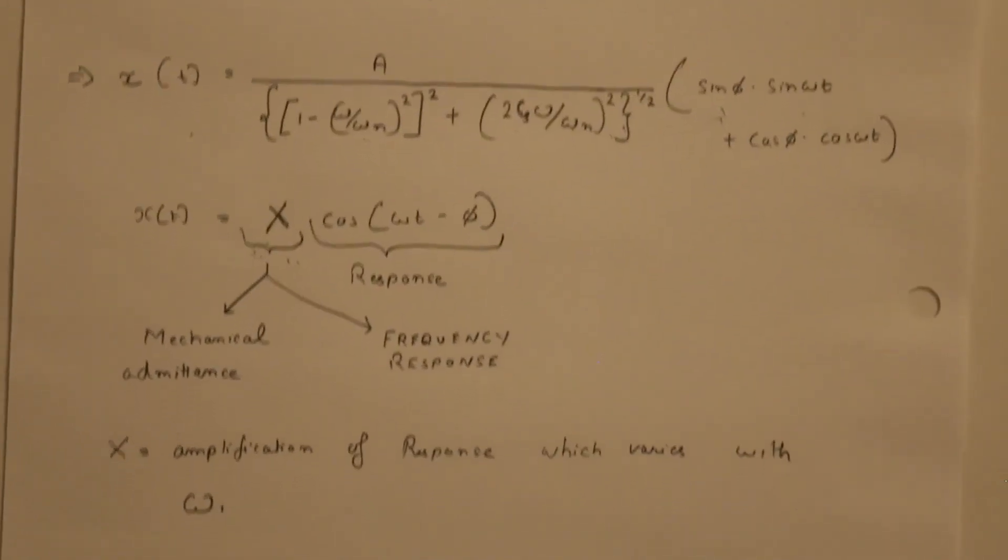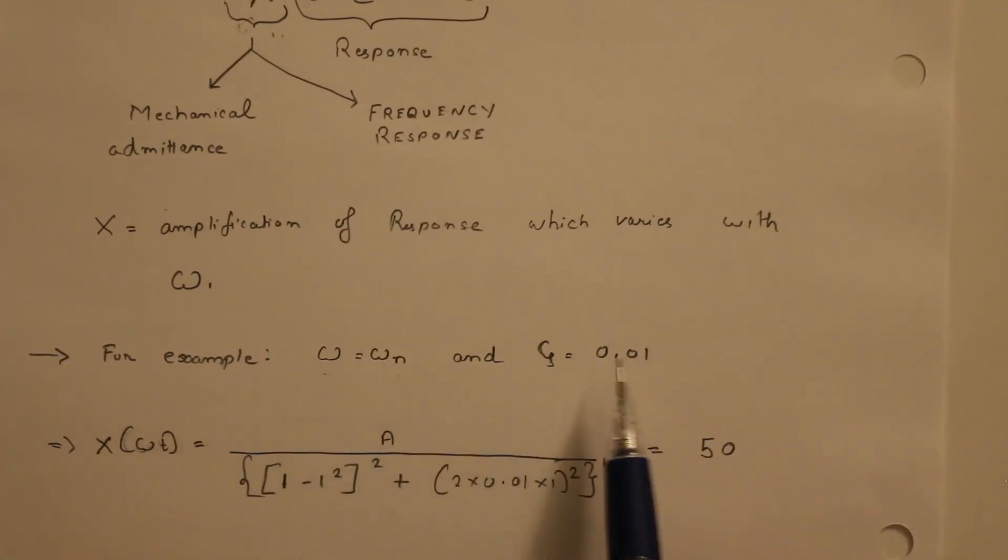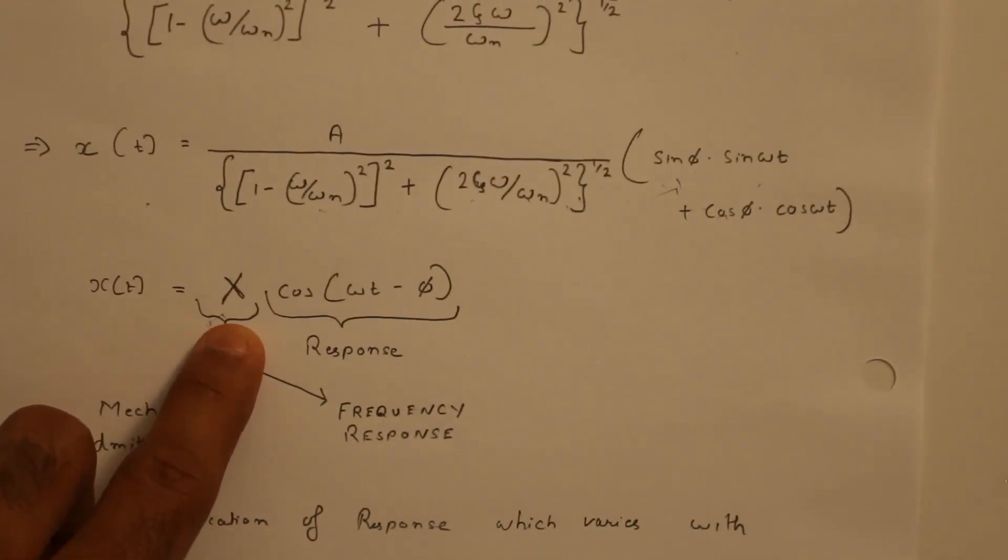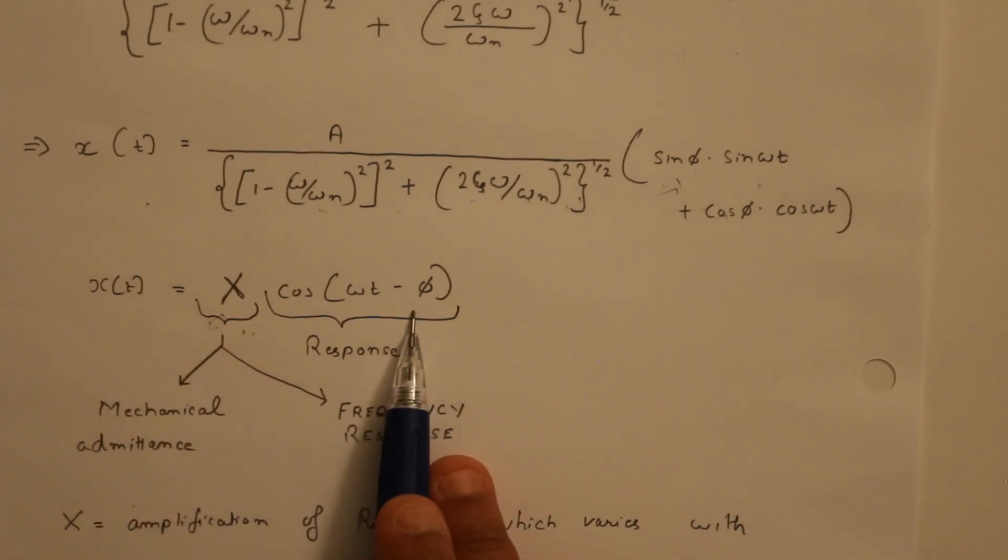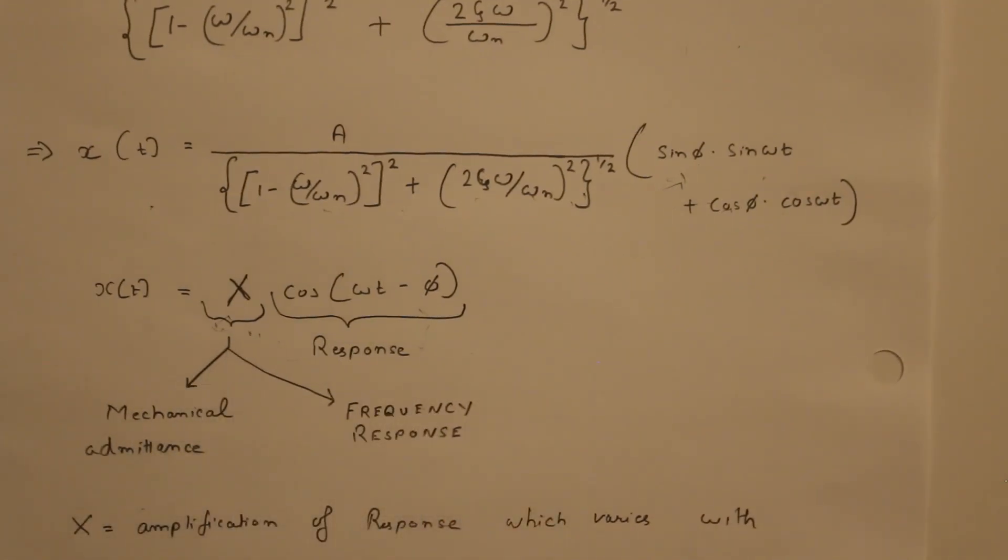Let's say the frequency of external force matches the frequency of the natural frequency of the system. That means ω is equal to ωn. Now let's say the damping of the system is 0.01. Once I replace all those values into this equation and let's say a is equal to 1, what I get x(ωt) is equal to 1 over 1 minus 1 square plus 2 into 0.01 times 1. That is equal to 50. That means the value of x is 50. The multiplier on the actual response of the system when damping is equal to 0.01 is equal to 50 times just a static force in a way.